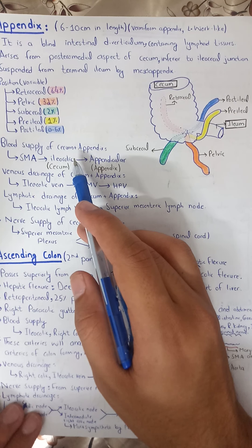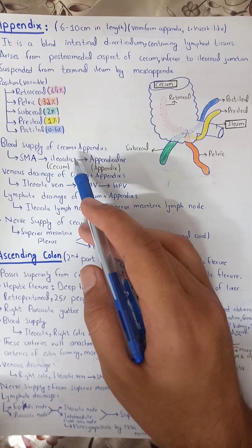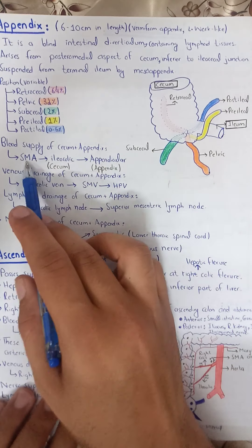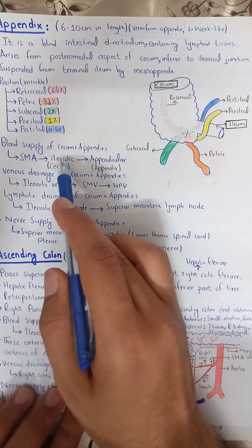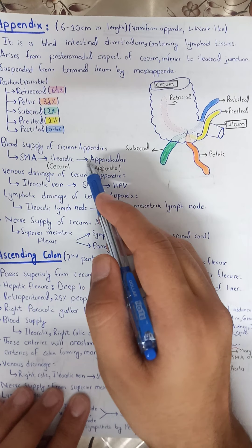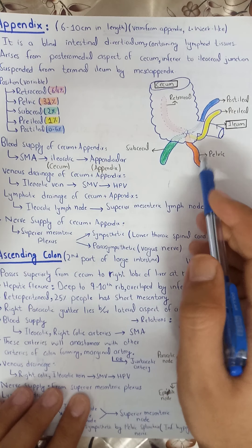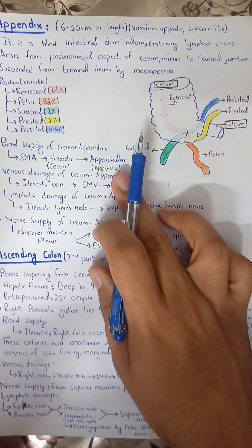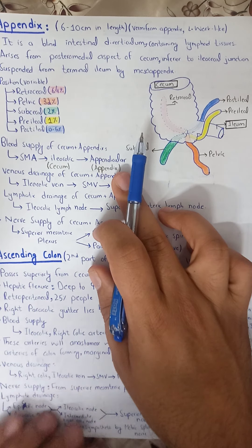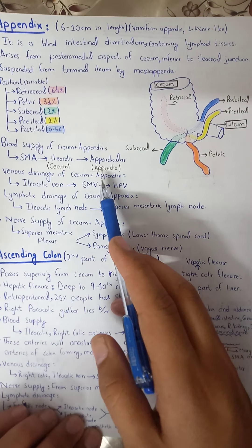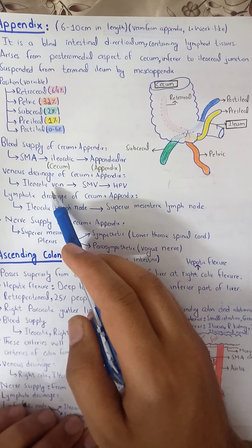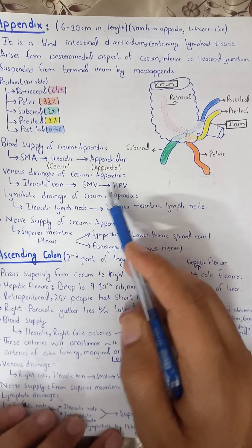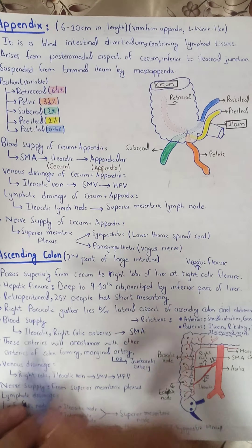The blood supply of the cecum and appendix: both are midgut structures, so blood supply is from the superior mesenteric artery. A branch from the superior mesenteric artery — the ileocolic artery — supplies the cecum, and the appendicular branch supplies the appendix. For venous drainage, the cecum and appendix drain via the ileocolic vein into the superior mesenteric vein, which drains into the hepatic portal vein and then the liver.